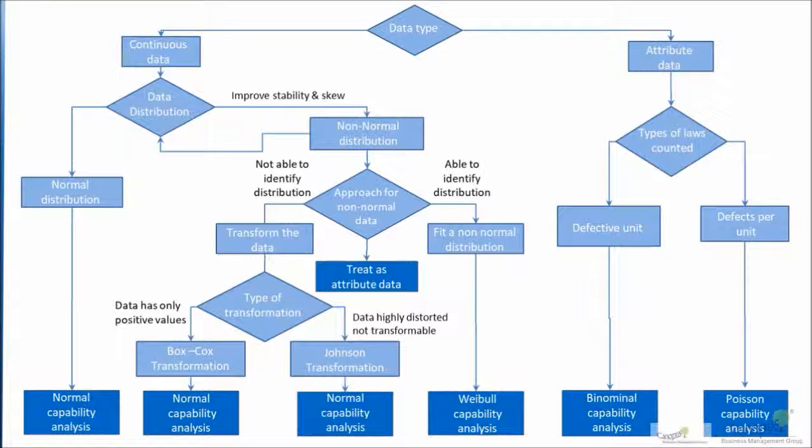Here is the tree. At first sight it might look a little complex, but I'll help you decode this and understand it better. So let's start with the top of the tree. It says the data type could be either continuous or it could be attribute.